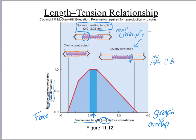The just-right area is the optimum. Now looking at the overly contracted state: at rest, the thin filaments are already overlapping in the middle. That means this sarcomere only has a very short distance it can contract. Before the signal runs out, it will reach maximum contraction, meaning it has less ability to shorten and move things.